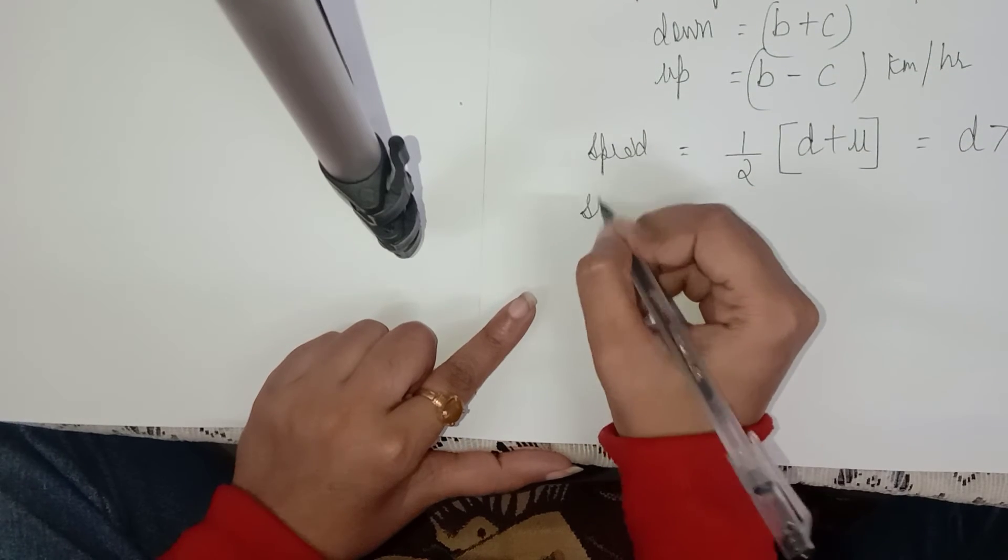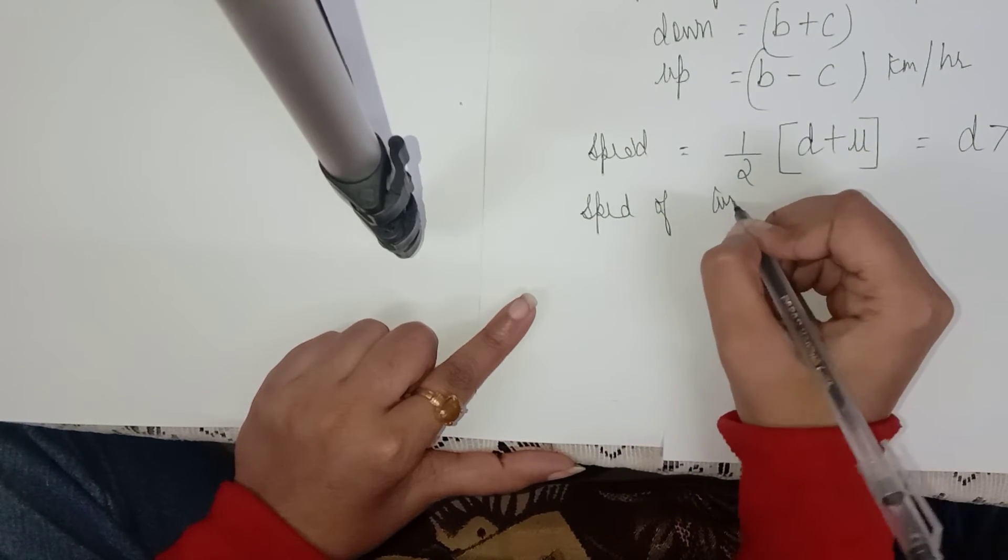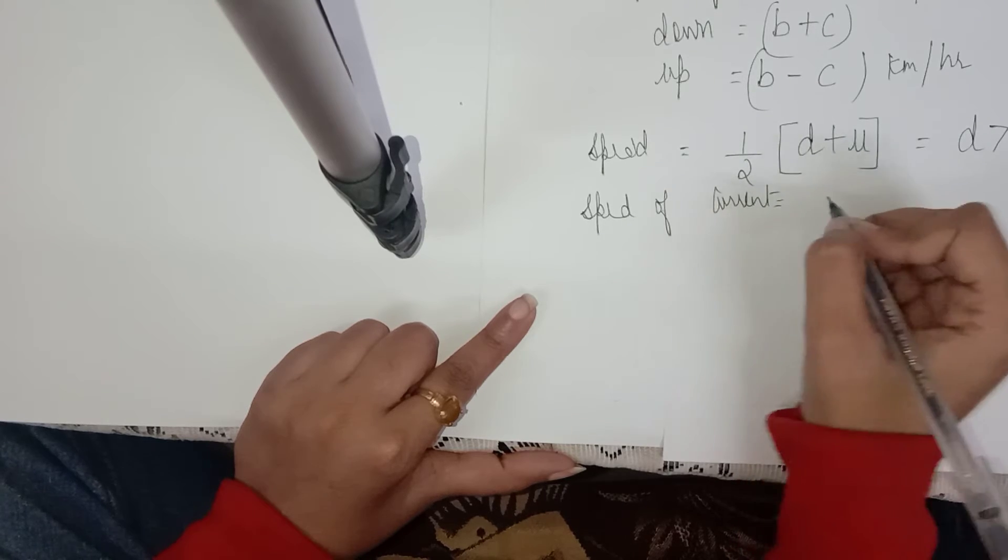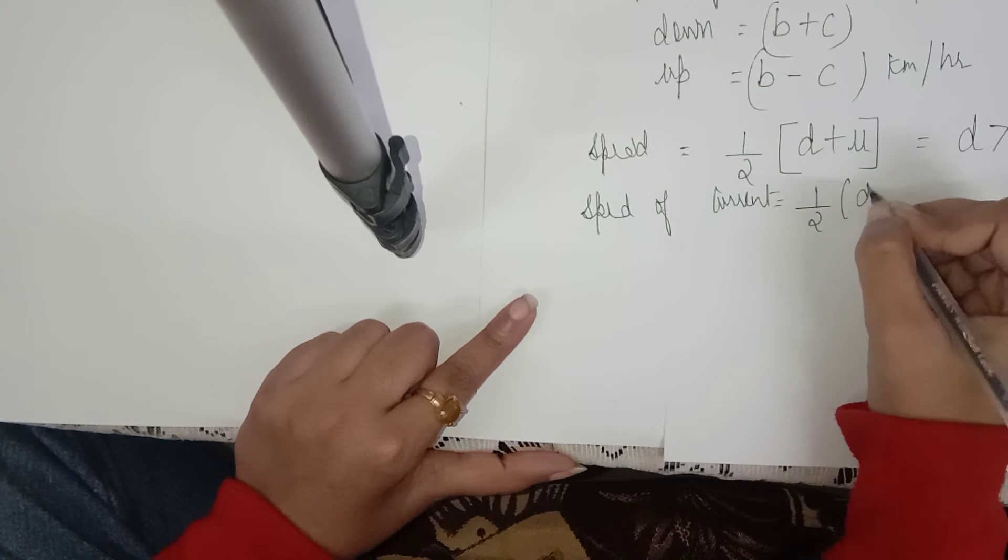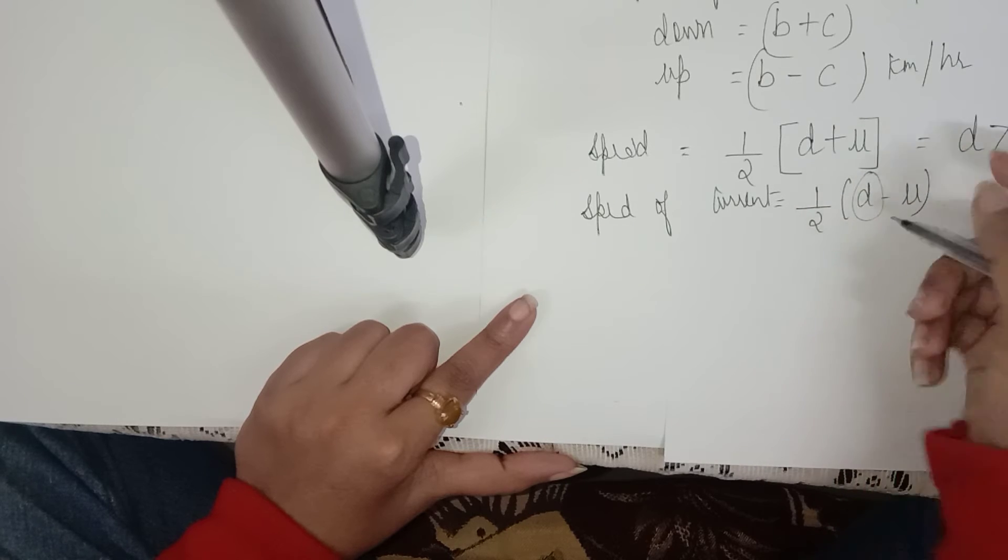Now to calculate the speed of current. Speed of current is half of D minus U, as D is always greater than U.